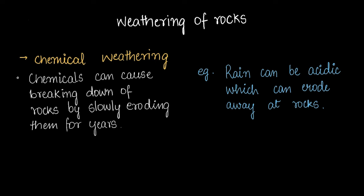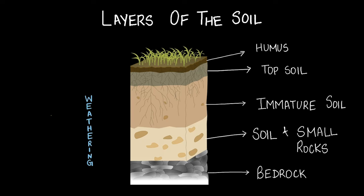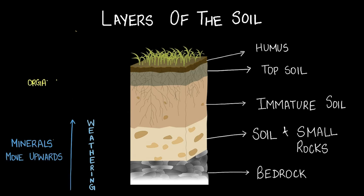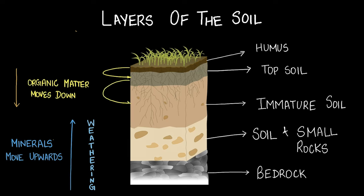In the context of weathering, bedrock breaks down into smaller rocks, which further break down into immature soil, which further becomes topsoil. This causes minerals to move upward through the layers. Organic matter, on the other hand, moves in the opposite direction — downward. Humus is the source of organic matter, which penetrates down toward topsoil and then toward immature soil.